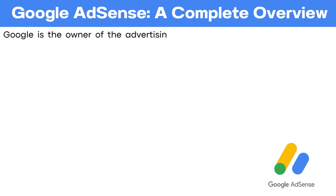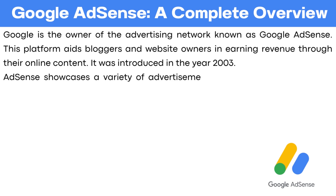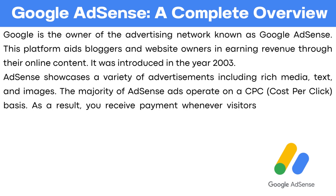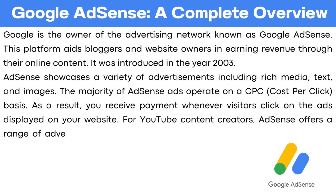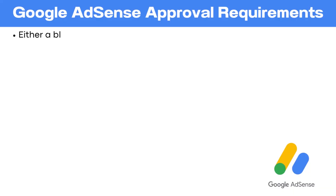A complete overview of Google AdSense. Google is the owner of the advertising network known as Google AdSense. This platform aids bloggers and website owners in earning revenue through their online content. It was introduced in the year 2003. AdSense showcases a variety of advertisements, including rich media, text, and images. The majority of AdSense ads operate on a CPC, cost-per-click basis. As a result, you receive payment whenever visitors click on the ads displayed on your website. For YouTube content creators, AdSense offers a range of advertising options with different pricing models, some based on CPM and others on CPC.